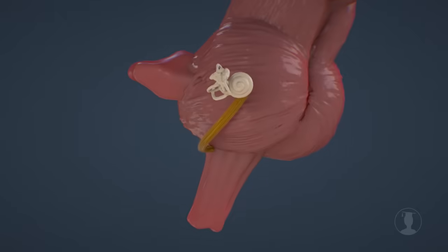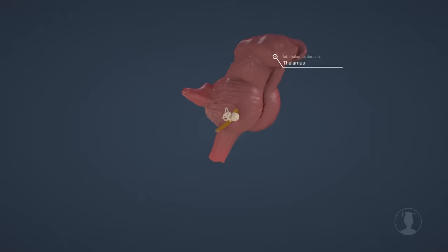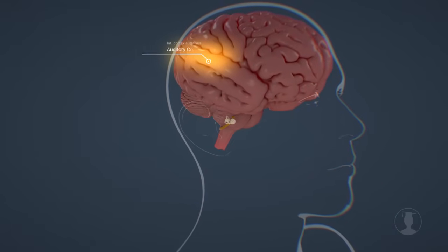The processed signals travel through various stations to the thalamus, which carries out further processing and finally transmits the signals to the auditory cortex. This is where we consciously process the electrical signals.